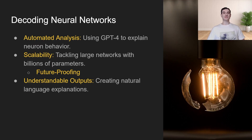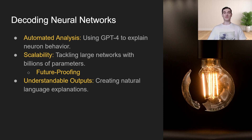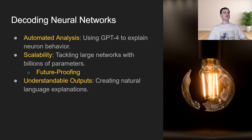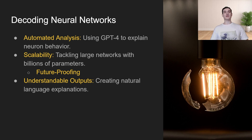With this all in mind, how do you decode a neural network? OpenAI was suggesting a way of using GPT-4 to explain the individual neuron activations. An advantage of using a neural network to explain the inner workings of other neural networks is scalability — as the most cutting-edge neural networks get larger and larger, we have an automated way of providing an explanation for why the neural network is acting the way it's acting. Another advantage is human-understandable outputs. Since GPT-4 works with natural language, any human would be able to understand in natural language terms why a neuron is performing the way that it is.